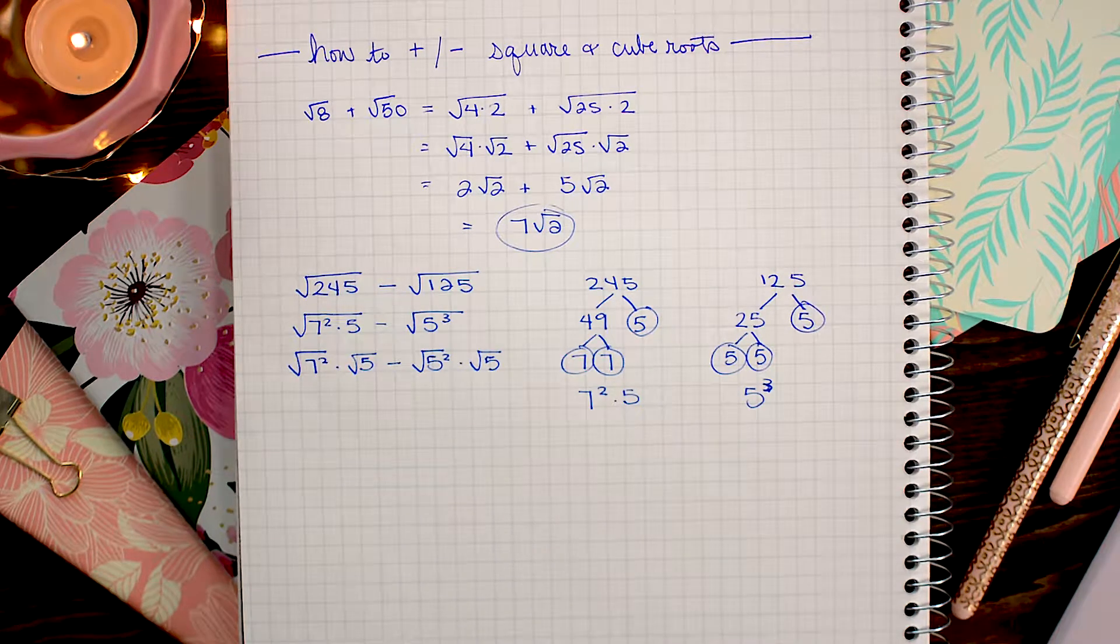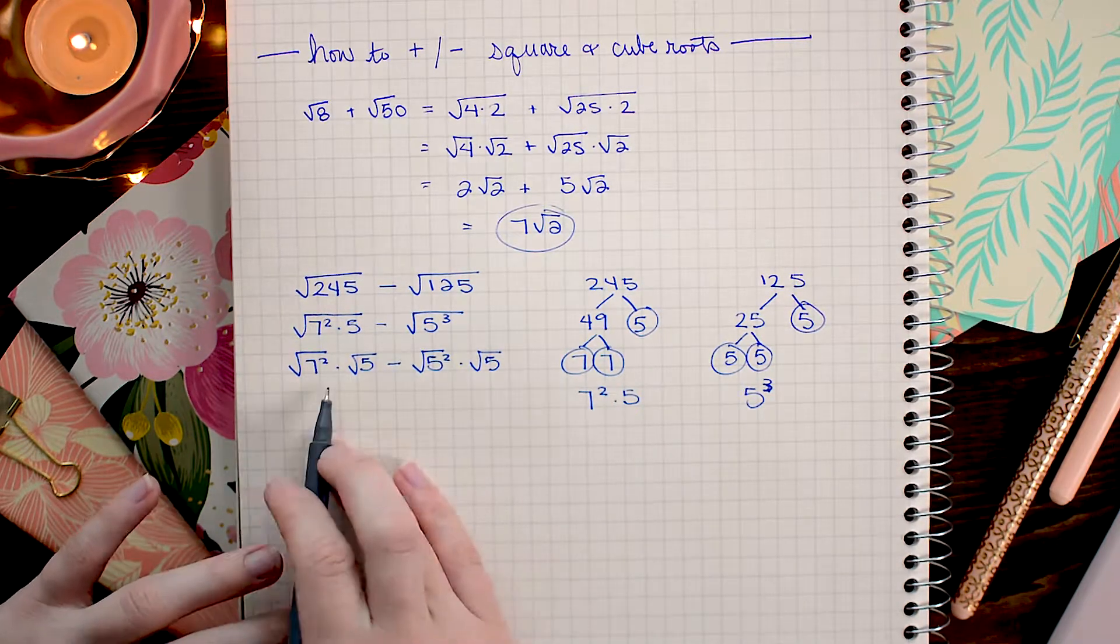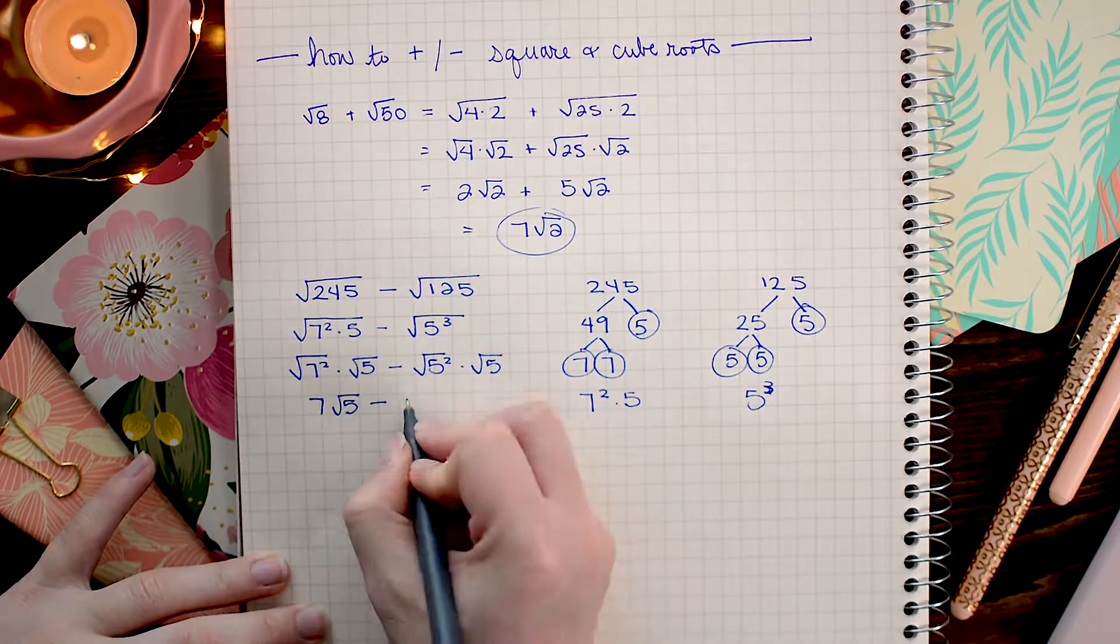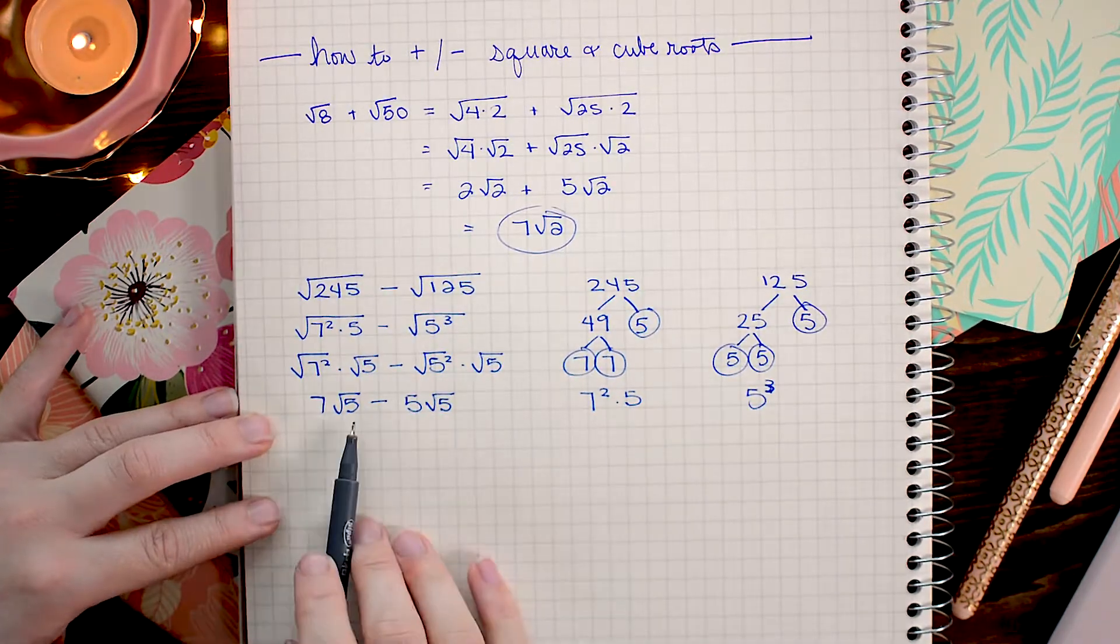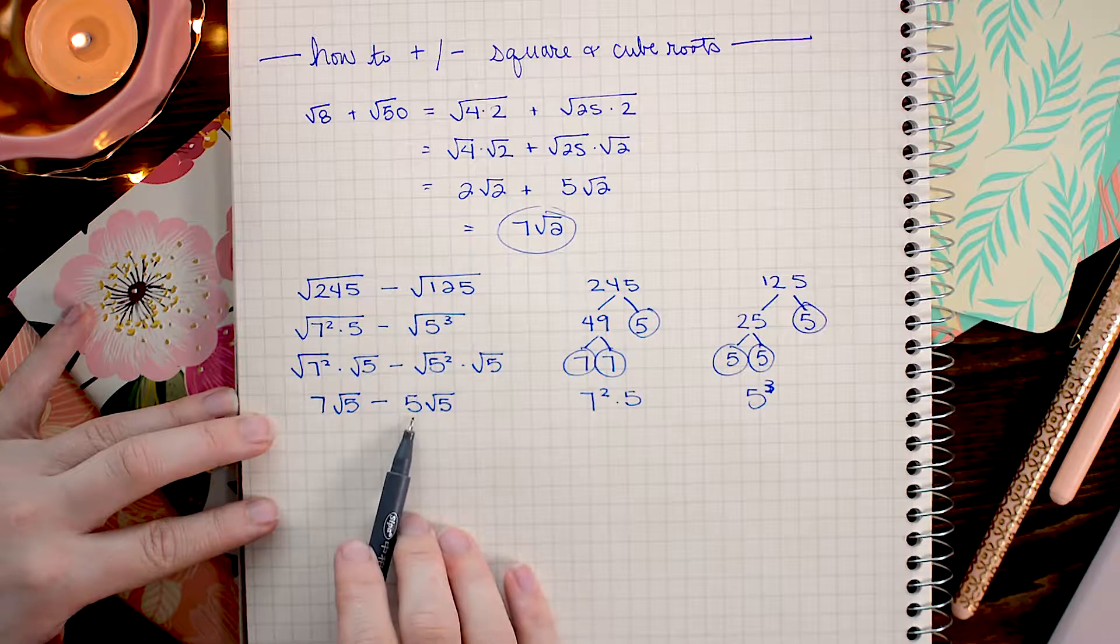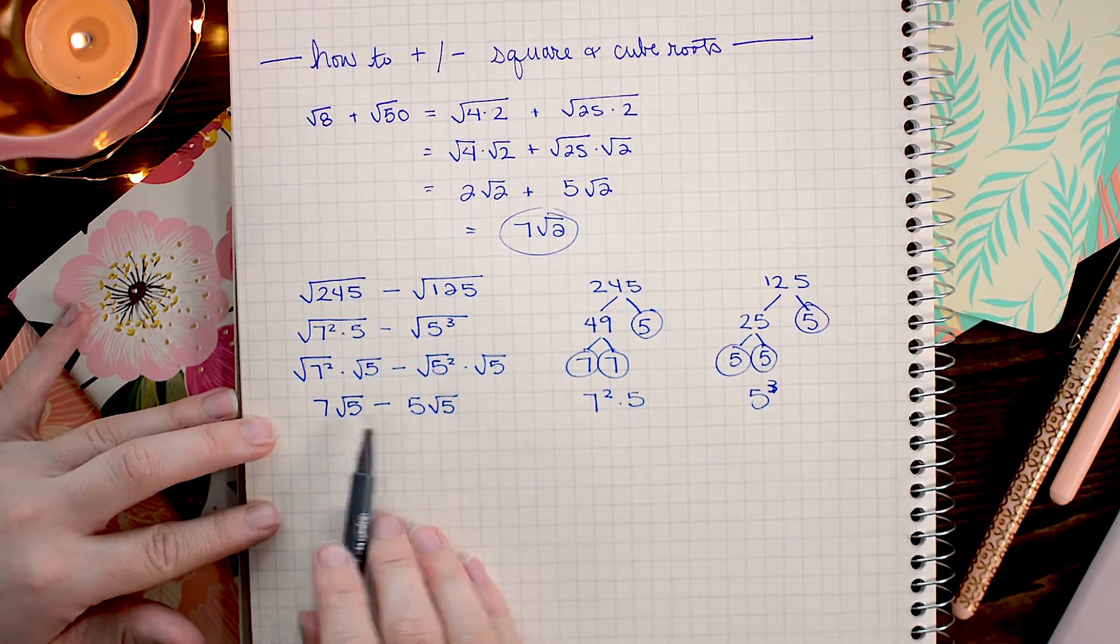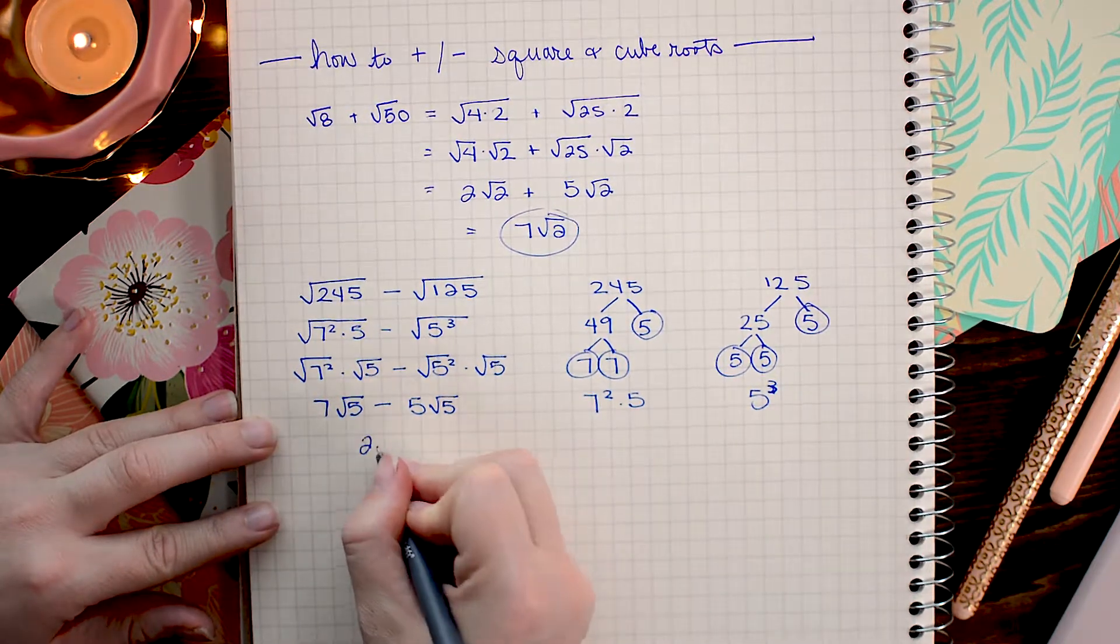Here we have 7 square root 5's and we're subtracting away 5 square root 5's which leaves us with 2 square root 5's.